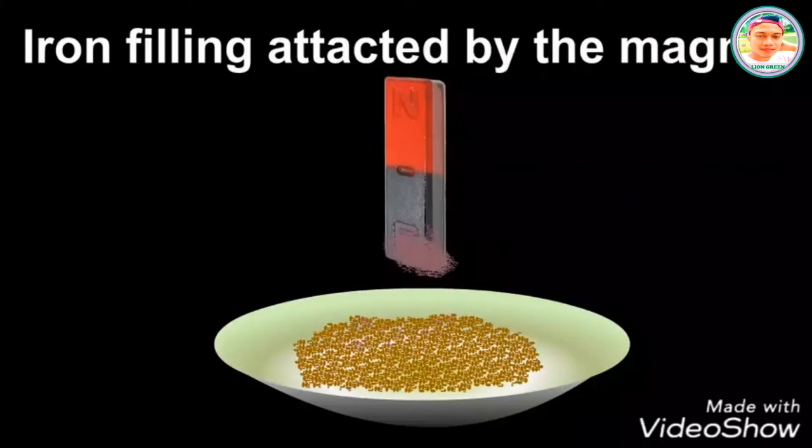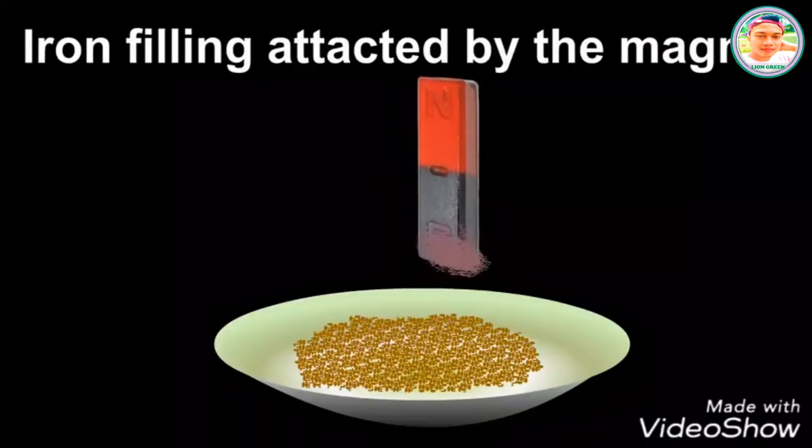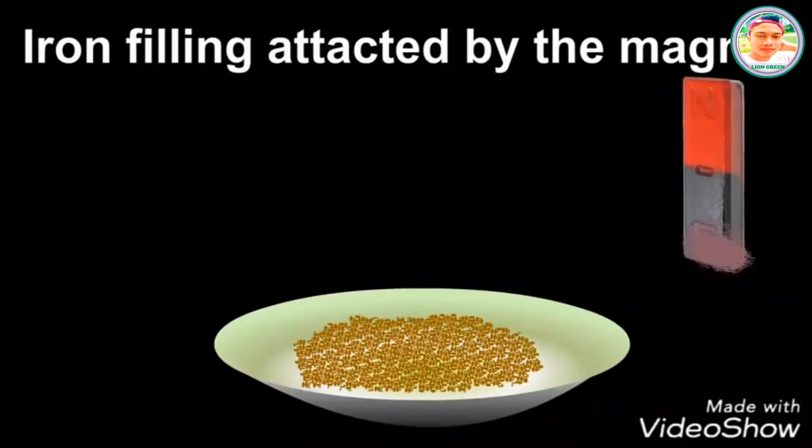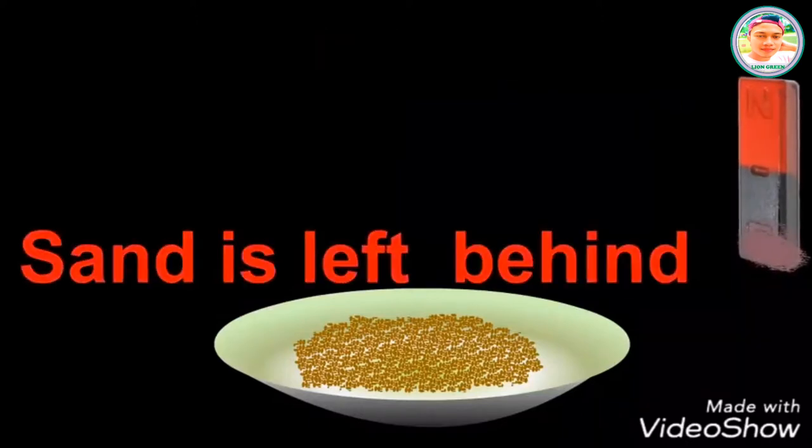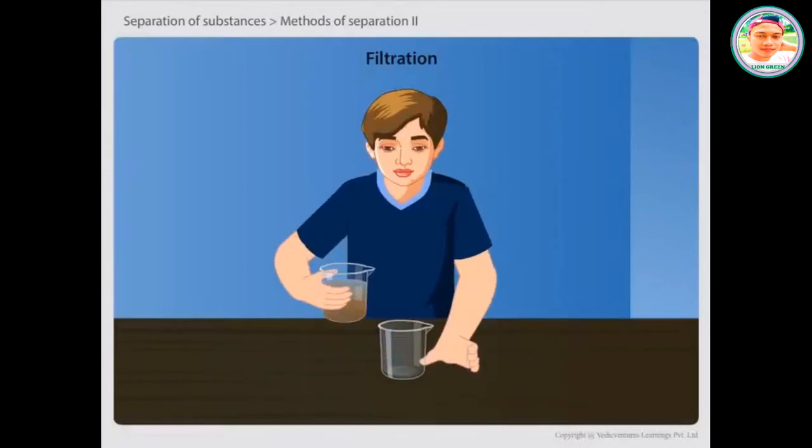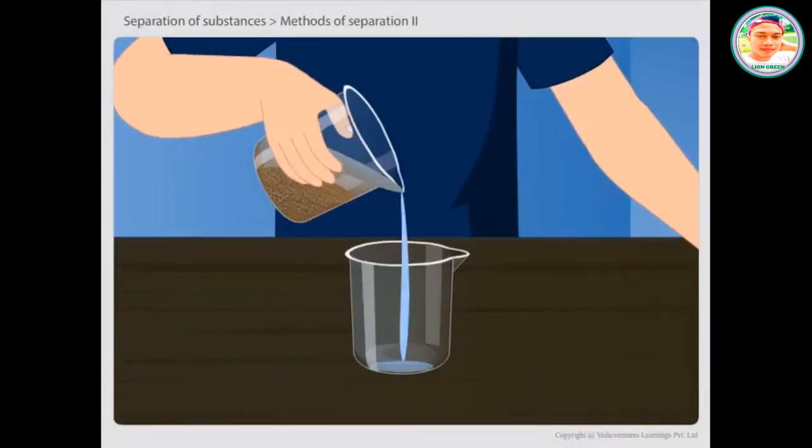As the magnet approaches the plate, the fillings get attracted and stick to the magnet. Thus, the iron particles in the mixture are removed by using a magnet. We have learnt that separation of a mixture can be done by decantation.